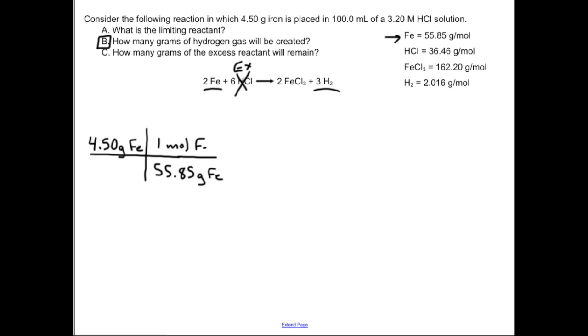Notice I gave that to us over here: 55.85 grams of iron, one mole iron. I highly recommend that you actually write the species. It really doesn't take much time but it's really important for keeping track of what's going on because this next step is that central double arrow, the stoichiometry one, where I'm going to go from two moles of iron to three mole of H2.